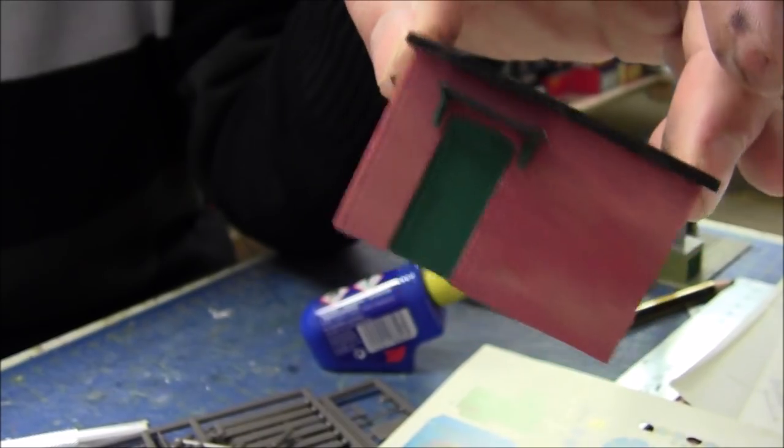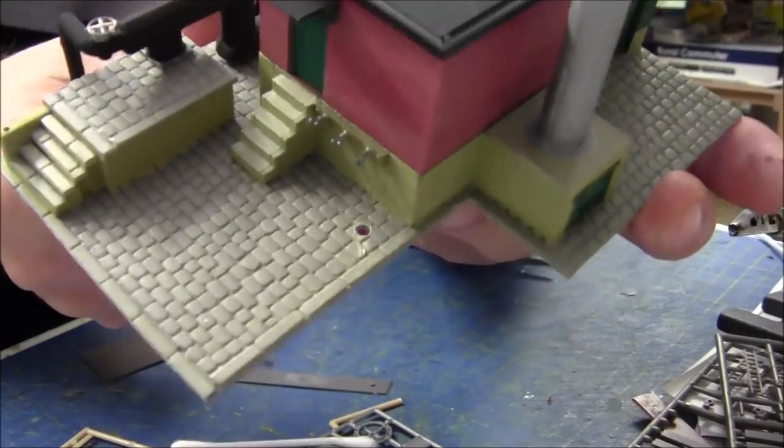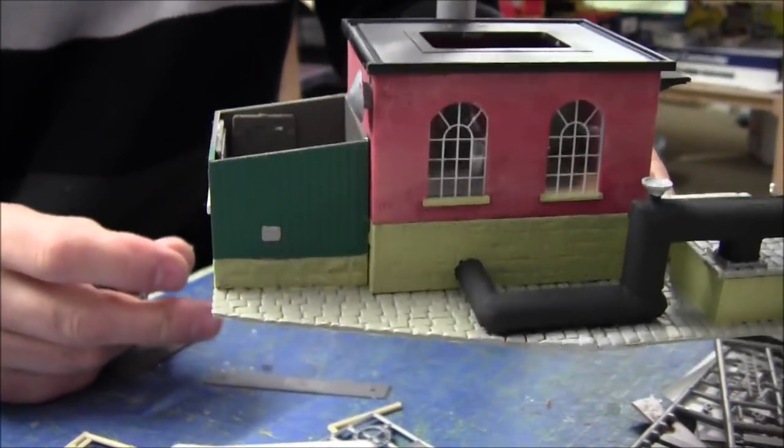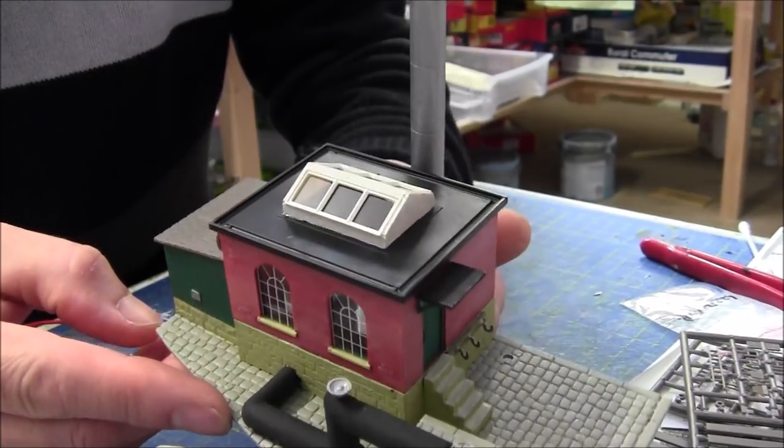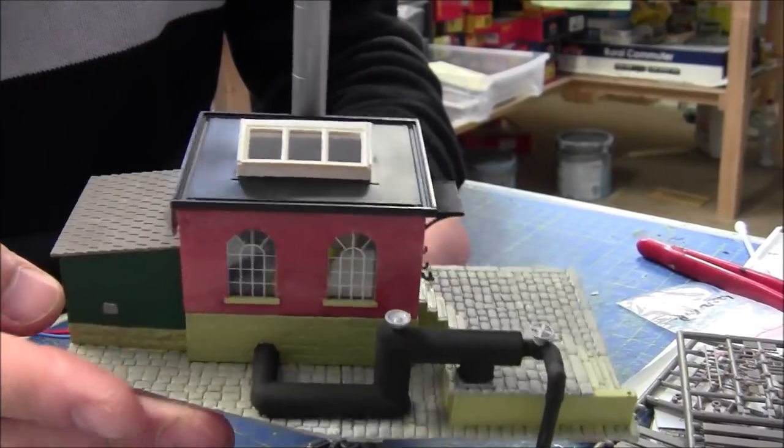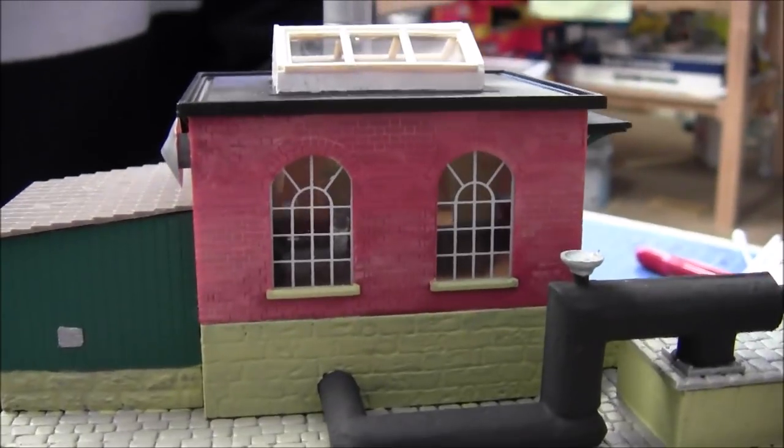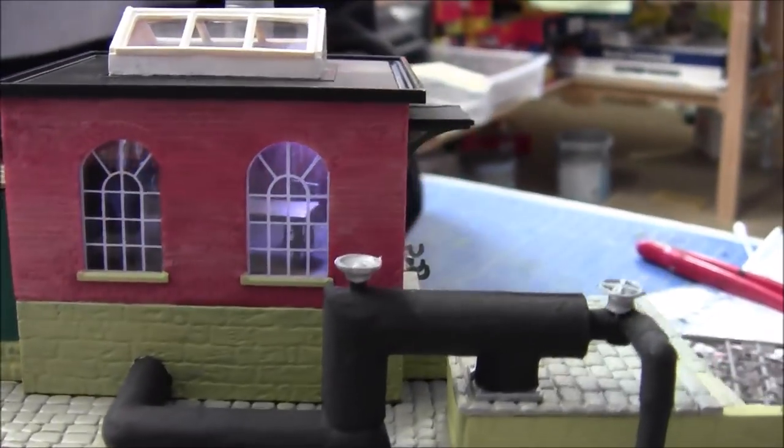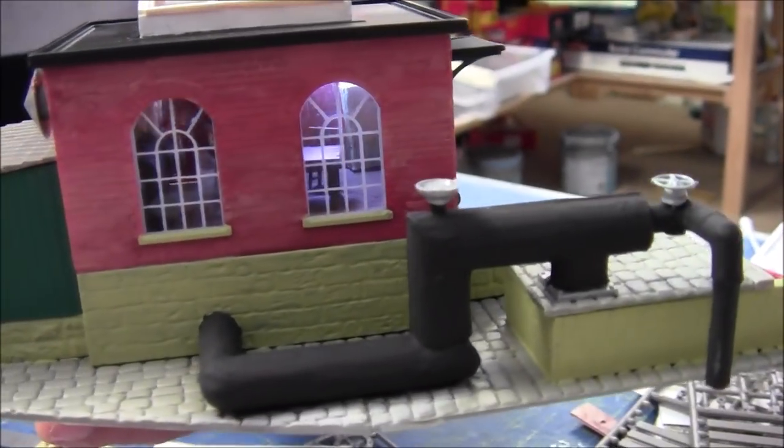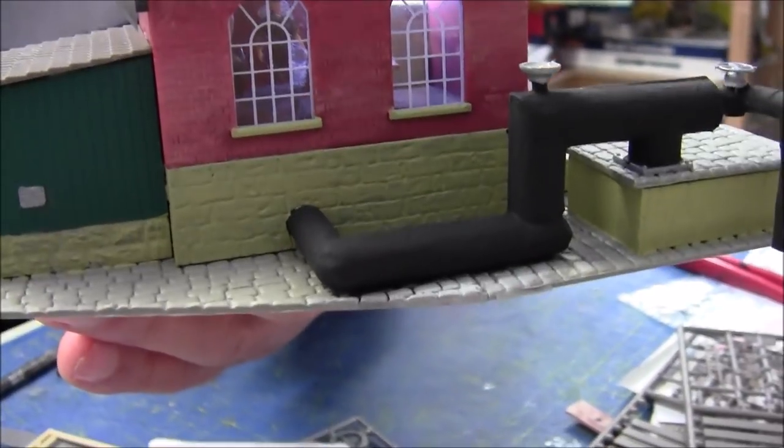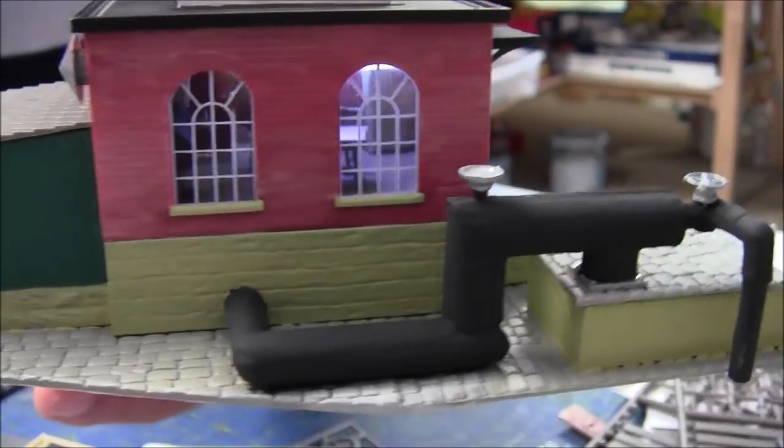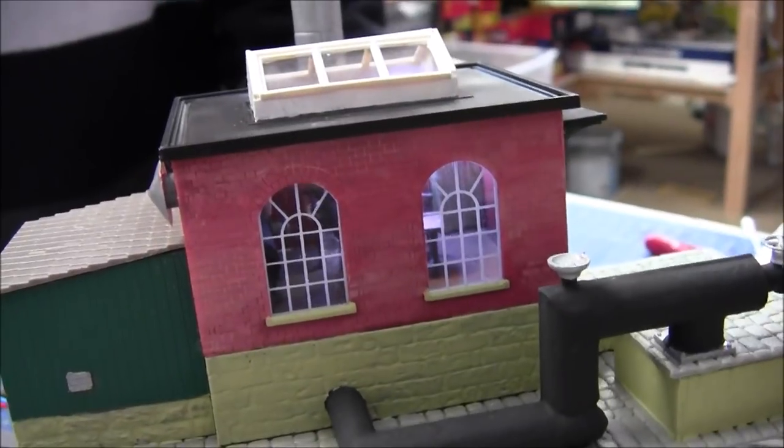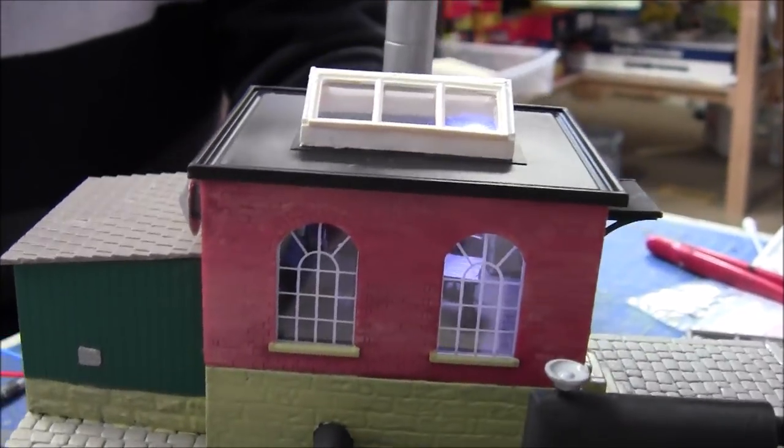The building is now glued onto the stone base. The skylight's on and the roof's on the small outbuilding. The LED works - you can see the little table, the chairs, the control cabinet, and the guy standing there. I'm happy with that. It's just finishing off the kit now.